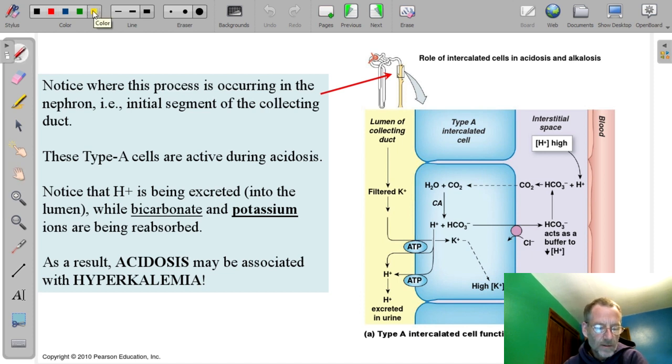A couple of notes here on this picture. First of all, note where this process is occurring in the nephron. This little figure up here is showing the initial portion, the initial segment of the collecting duct. So that's where these cells are, that's where this story is taking place.